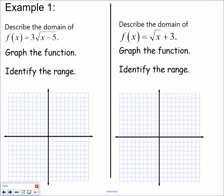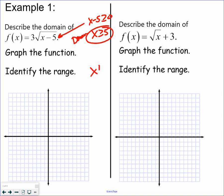So whatever is under the square root must be greater than or equal to zero. Under this square root is x minus 5. It needs to be greater than or equal to zero, so solving that, x would be greater than or equal to 5. That is your domain — the domain is x is greater than or equal to 5. What that means is when you're doing your x-y chart, 5 is the first value and the numbers must go up from there.